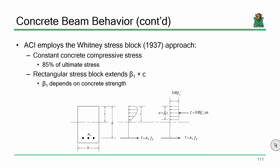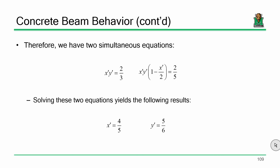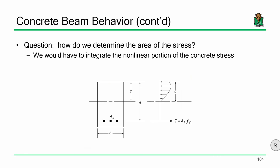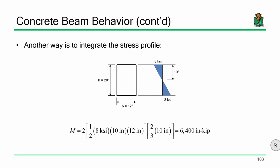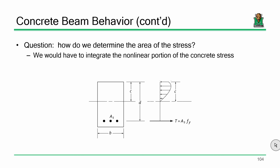Let me go back a couple slides to make sure we're all clear with the problem. We discussed this notion of instead of using sigma equals MY over I to determine how much moment is in a section, we say we'll just make an assumption of what the stress profile looks like and then integrate it directly, which is easy if you've got a rectangular or triangular stress distribution.